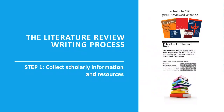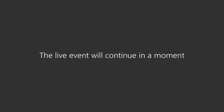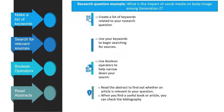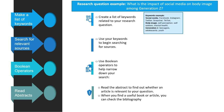Step one is to collect scholarly information and resources by making a list of keywords. For example, if my research question is 'What is the impact of social media on body image among Generation Z?', I would create a list of keywords: for social media, synonyms like Facebook, Instagram, Twitter, Snapchat, TikTok; for body image, self-perception, self-esteem, mental health; and for Generation Z, teenagers, adolescents, youth.